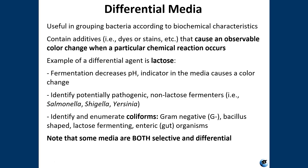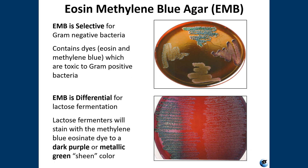Selective and differential media can be combined and play an important role in the identification of bacteria via biochemical methods. Let's look at the first one, EMB. EMB is selective for gram-negative bacteria. It contains eosine and methylene blue dyes, which are toxic to gram-positive bacteria. EMB is differential for lactose fermentation. The lactose fermenters will stain with the methylene blue or eosinate dye and will become either a dark purple or a metallic green color.